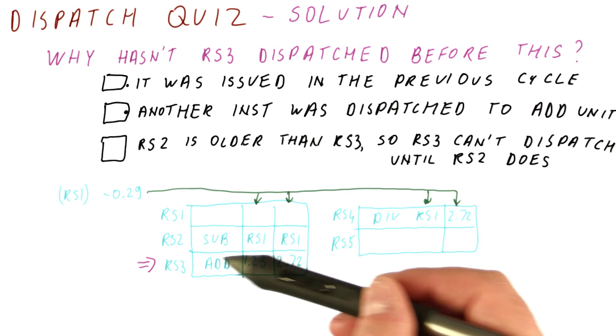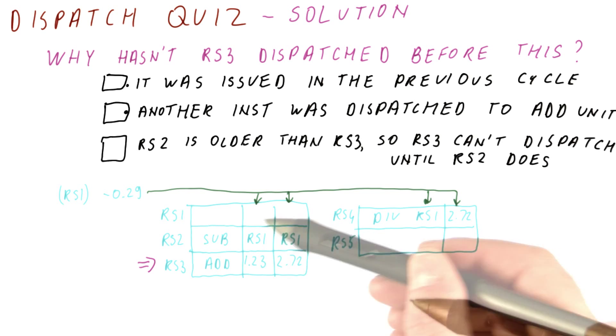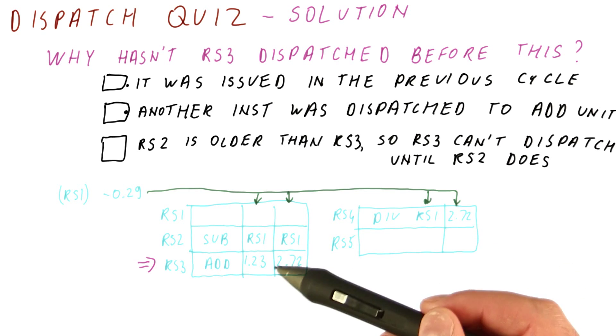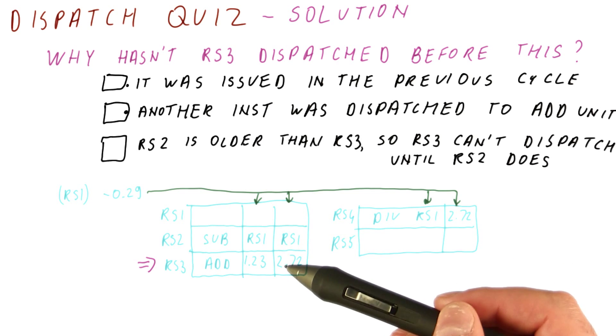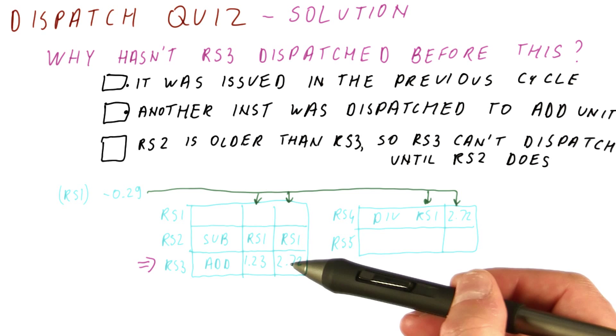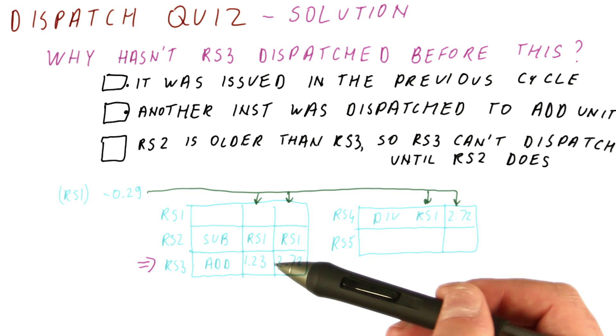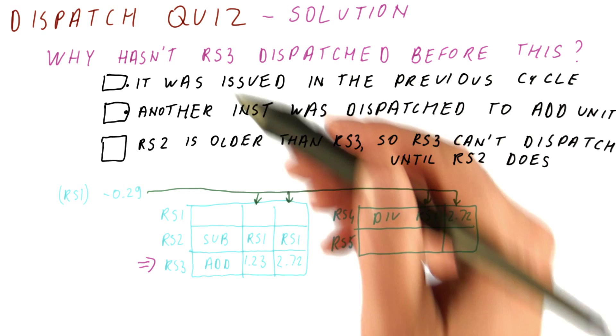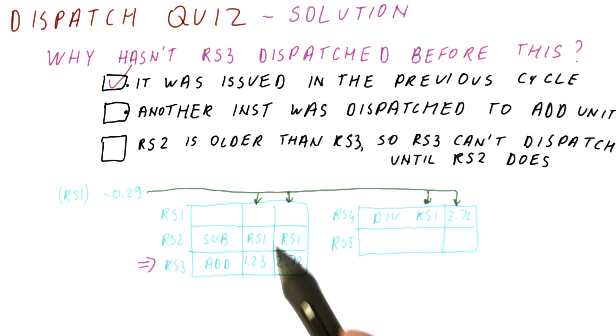there might not be enough time. Simply, this reservation station, when we were considering what can be dispatched for execution, this one simply wasn't there yet. Basically, in the same cycle where we select something, this got inserted here and it wasn't inserted early enough in the cycle. So this is possibly correct. It can happen that you cannot do both things consecutively in the same cycle.